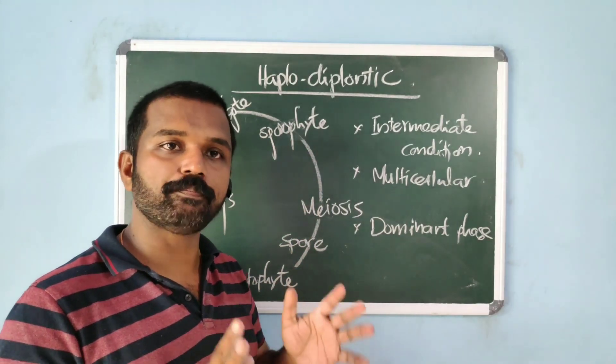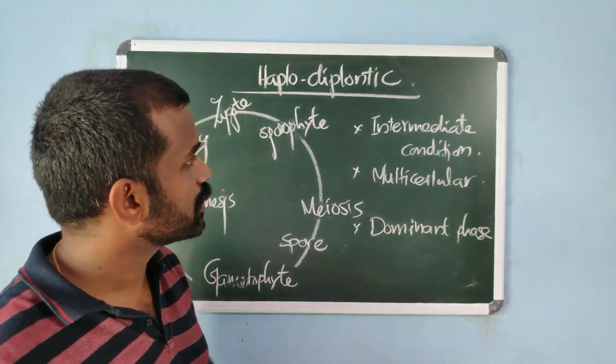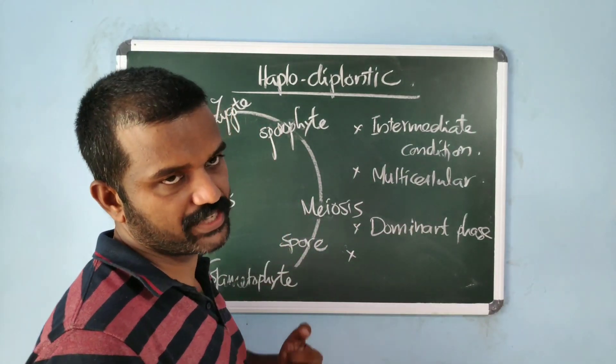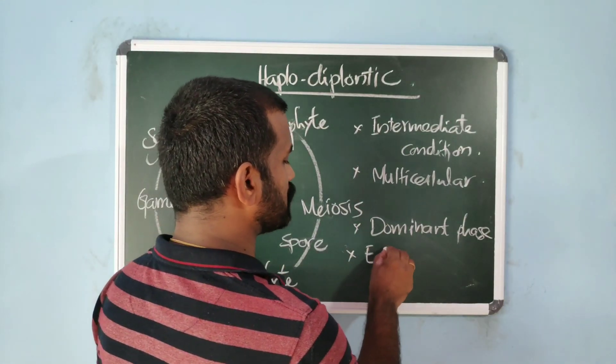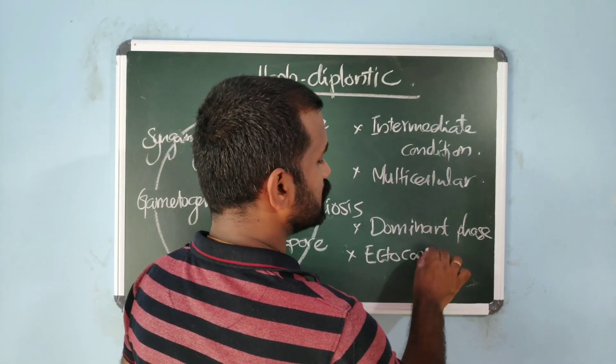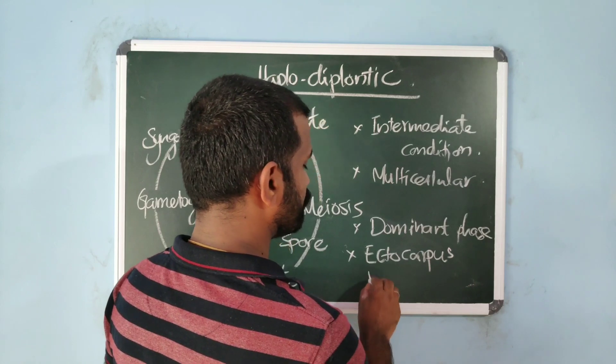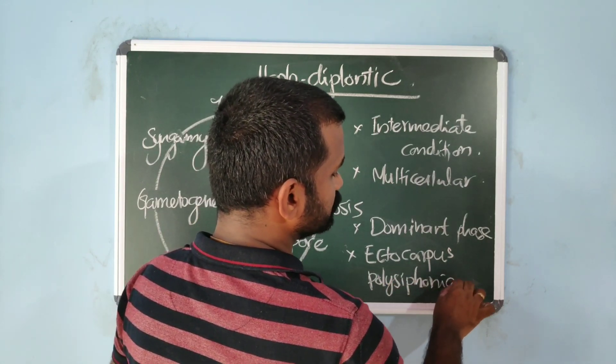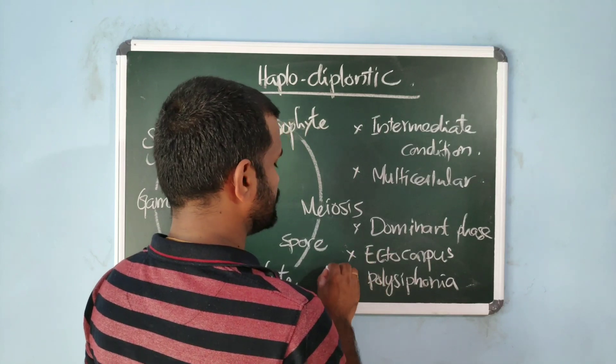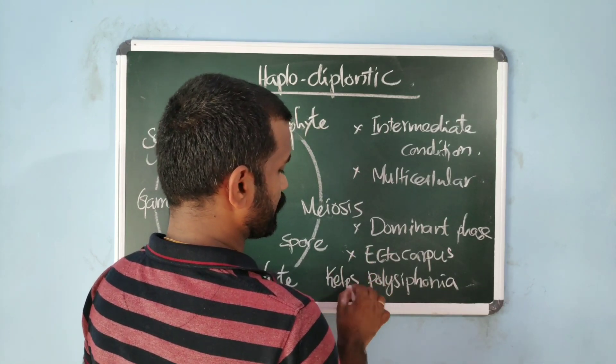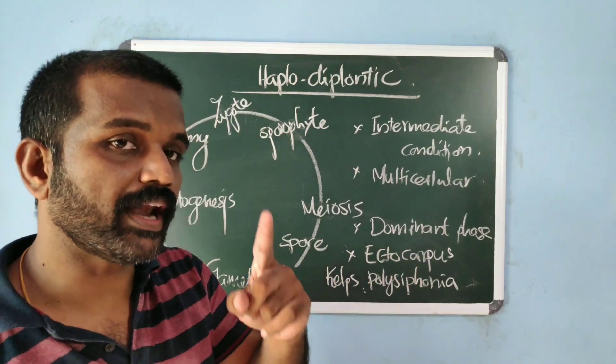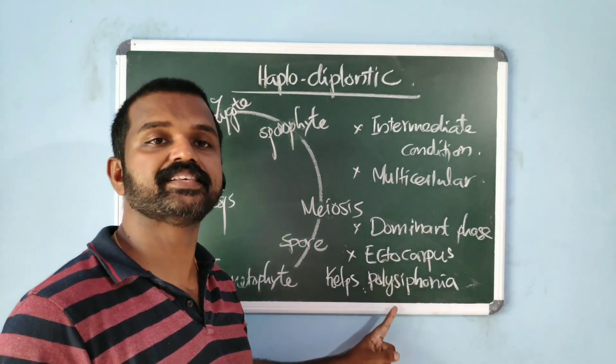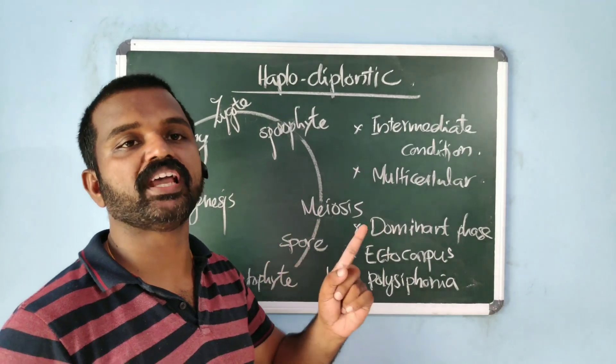That is haplodiplontic life cycle. Then a few algal genera that exhibit haplodiplontic life cycle. Examples: Ectocarpus, Polysiphonia, kelps. Remember, algal genera that exhibit haplodiplontic life cycle, these are exceptions. These three exhibit haplodiplontic life cycle.